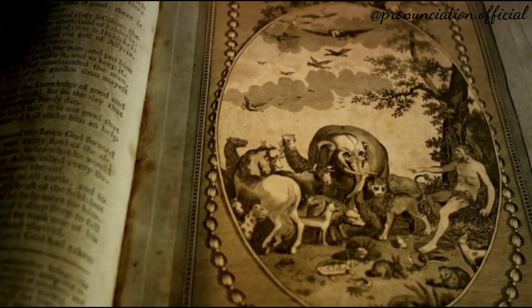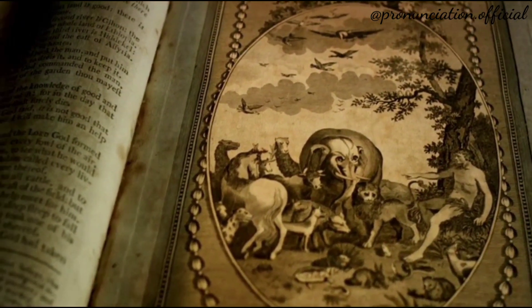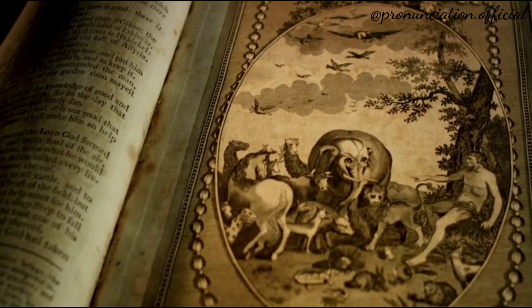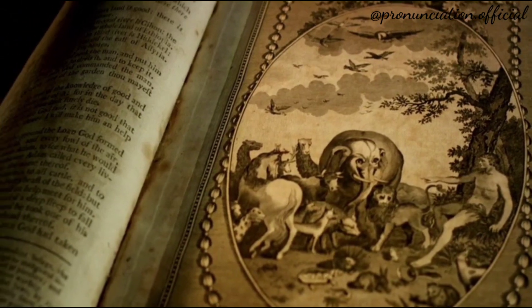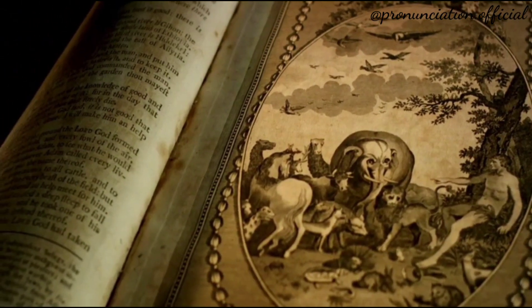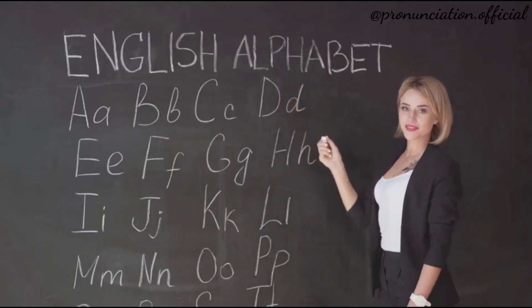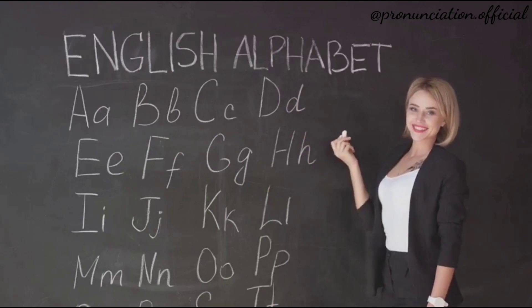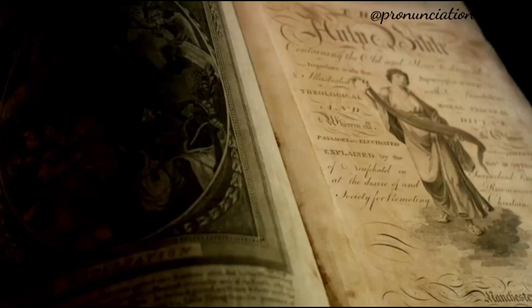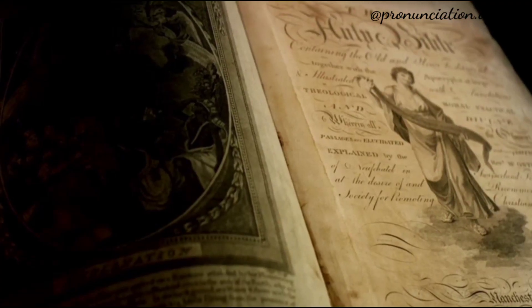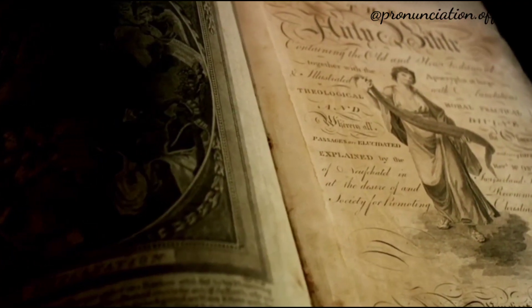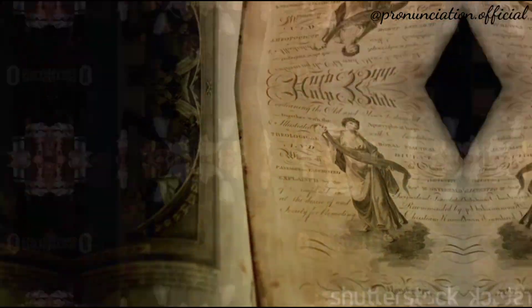The Great Vowel Shift was a phenomenon that unfolded between the 14th and 18th centuries. This shift led to a drastic modification in the pronunciation of numerous words, molding the language into what we can now identify as Early Modern English.